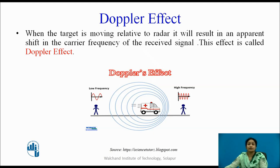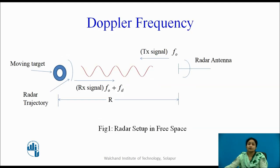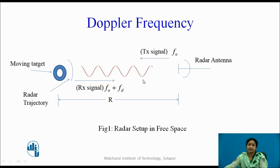Using this principle, we will derive the Doppler frequency — that is, how much is the change in frequency. Let us consider a radar setup with a radar antenna transmitting at frequency f0, and we assume the target whose parameters are to be determined is a moving target. The signals transmitted from the radar are continuous signals, as seen in this figure, denoted by frequency f0.